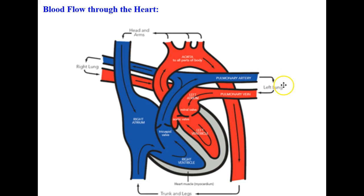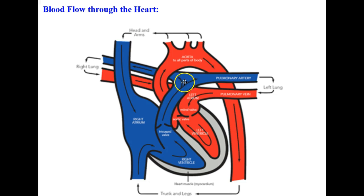From each lung, the blood becomes oxygenated and returns back to the heart through the pulmonary veins into the left atrium. Note that in our previous lesson on the circulatory system, any vessel carrying blood away from the heart is an artery, and any vessel carrying blood toward the heart is a vein. These two are the exception to the rule: here you have a vein carrying oxygenated blood, and here you have an artery carrying deoxygenated blood. They stick with artery meaning away from the heart and vein meaning toward the heart, but the pulmonary artery carries blood toward the lungs where it becomes oxygenated, and the pulmonary veins return it back to the heart into the left atrium.